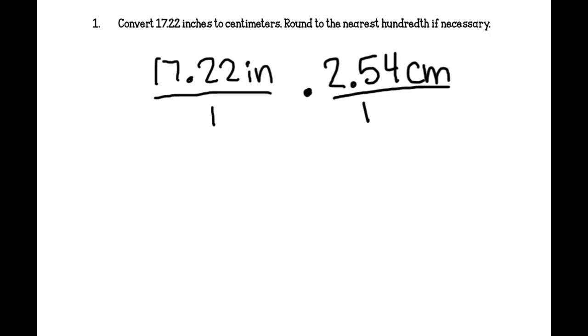Number 1 says convert 17.22 inches to centimeters. Round to the nearest hundredth if necessary. The first thing we're going to do is set this up as 17.22 inches. We're going to just put it over 1 so that it's a fraction. Times, there are 2.54 centimeters in every 1 inch. And we want it set up this way so that the inches are diagonal of each other, or whatever we're trying to cancel out. So that the labels just cancel each other out. Those inches just cancel each other out.